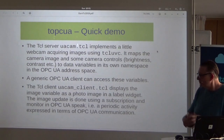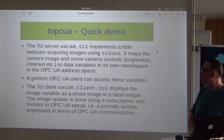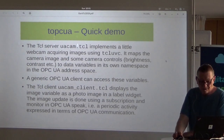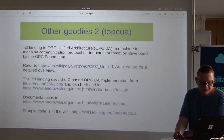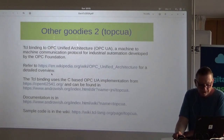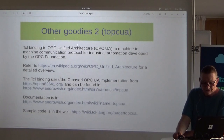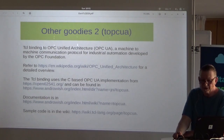Being a standard means it's possible to make generic clients which can browse and learn by introspection how the address space is built up. I found a project on GitHub called open62541.org, made by Fraunhofer in combination with some German companies, and made a TCL interface based on their C implementation. There's documentation on andrewish.org and sample code on the TCL wiki — search for TOPCUA, TCL OPC UA.